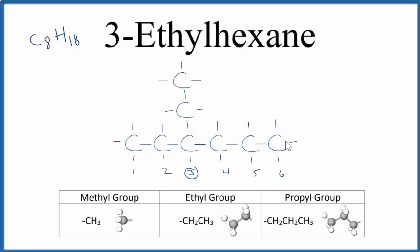You can see we have our hexane, six carbons. On the third carbon, we have our ethyl group here. And again, the molecular formula, C8H18. This is Dr. B, and thanks for watchin'.